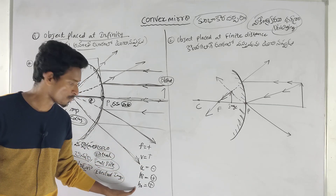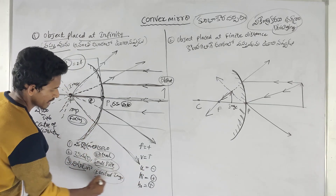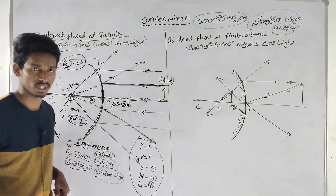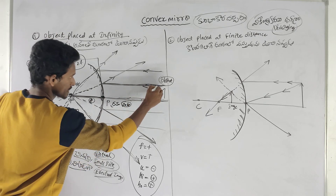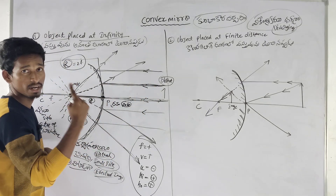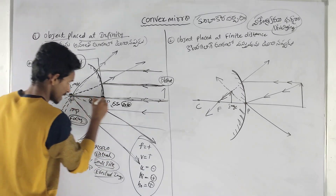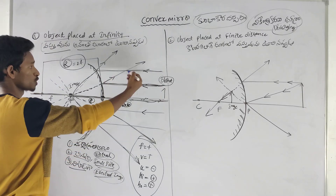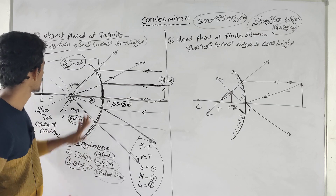In this case: hi is positive, h0 is positive, u is negative. The image is a small, erected image. In terms of sign convention: the incident ray going toward C is in the same direction — positive. That in the opposite direction — negative. This is the first case.